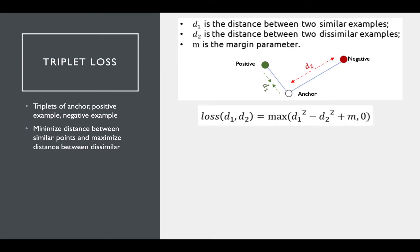It's simpler because we don't have that same indicator variable. It's the distance between the two similar examples squared, minus the distance between the two dissimilar examples squared, plus a margin, if positive, otherwise 0.